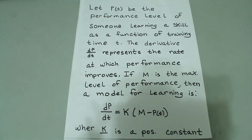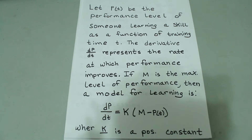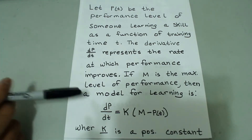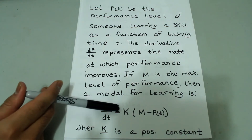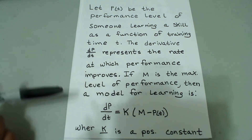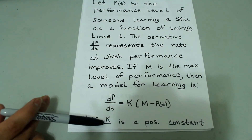The question states: let P of t be the performance level of someone learning a skill as a function of training time t. The derivative dp/dt represents the rate at which performance improves. If m is the maximum level of performance of which the learner is capable, then a model for learning is given by the differential equation dp/dt equals k times m minus p of t, where k is a positive constant.